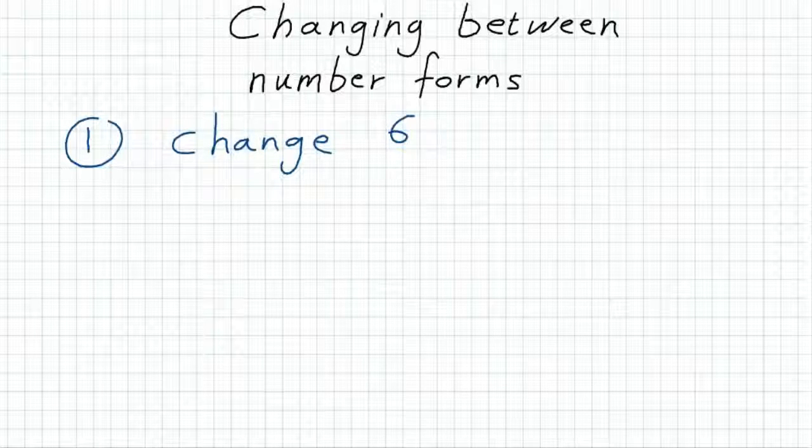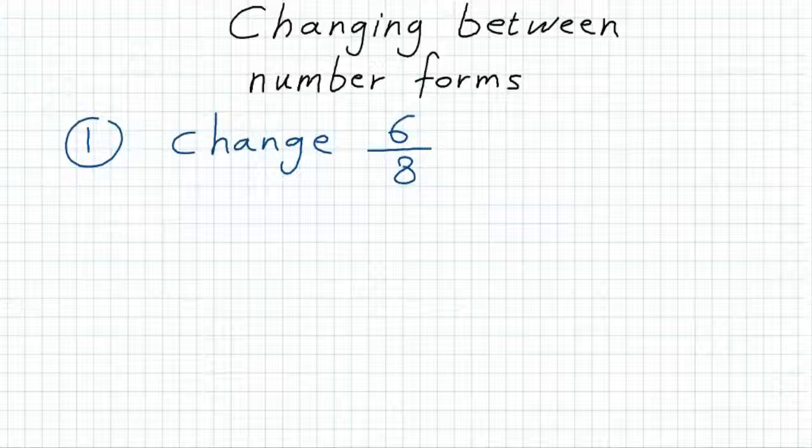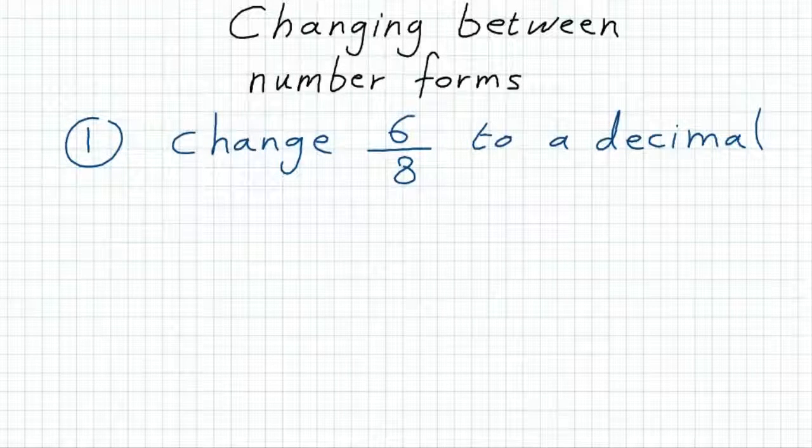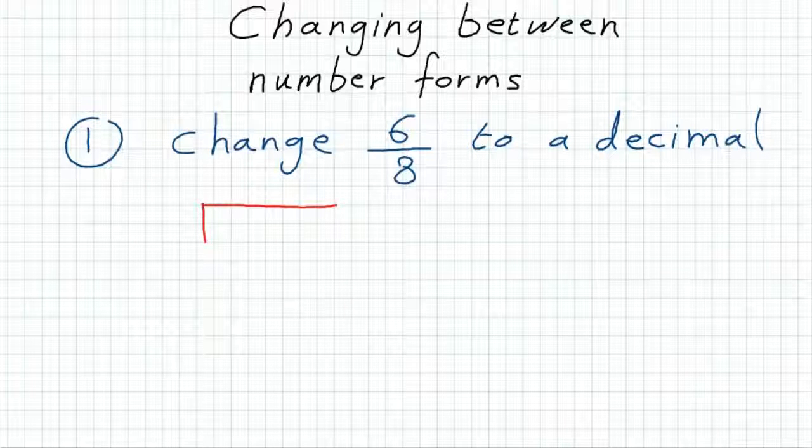First example: change the fraction 6 over 8 to a decimal number. To change this without a calculator, you need to divide using the long division 6 divided by 8.